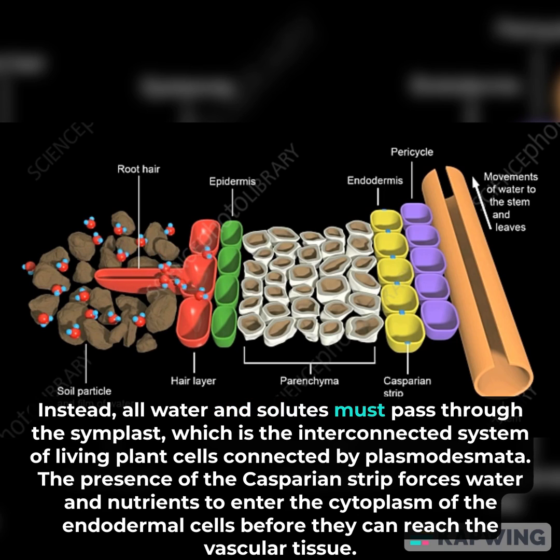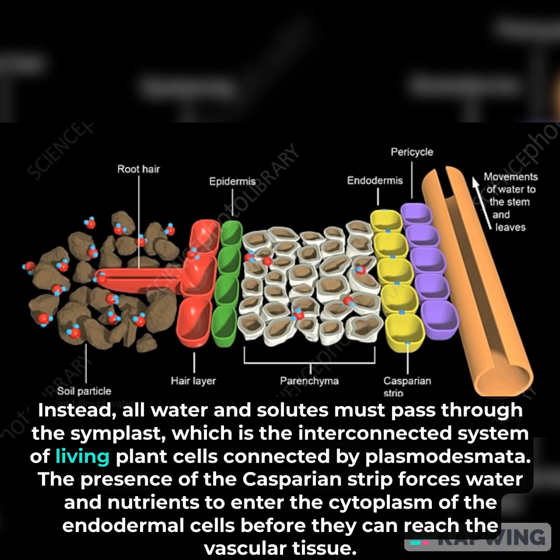Instead, all water and solutes must pass through the symplast, which is the interconnected system of living plant cells connected by plasmodesmata.